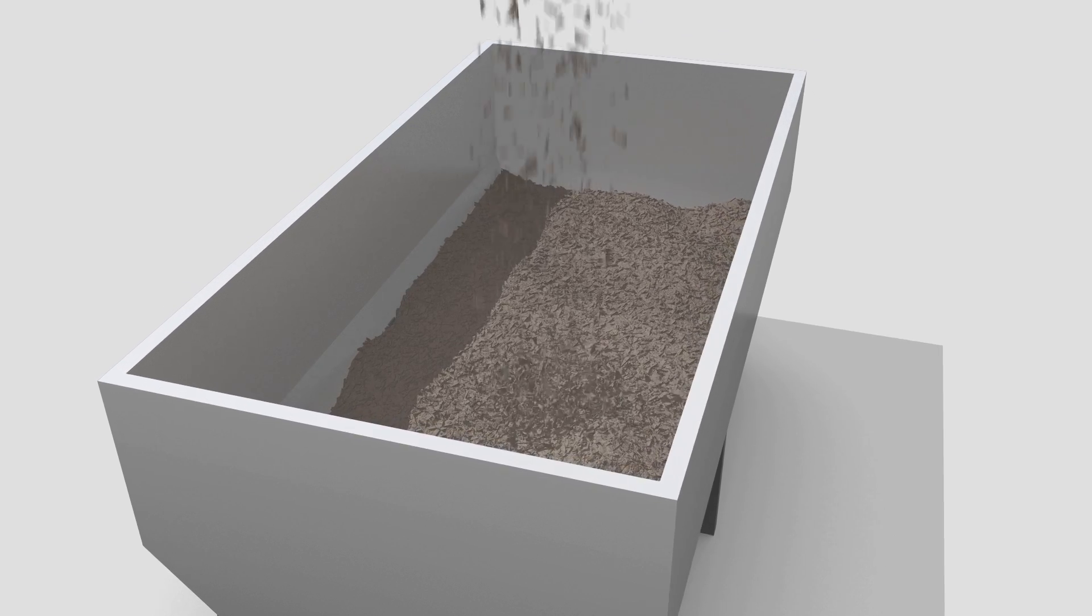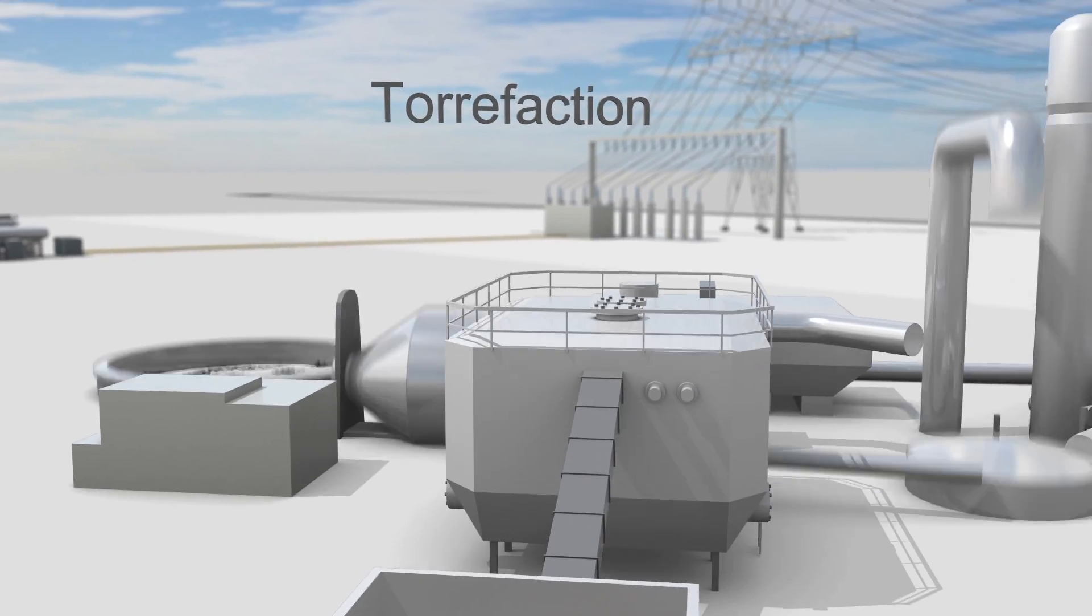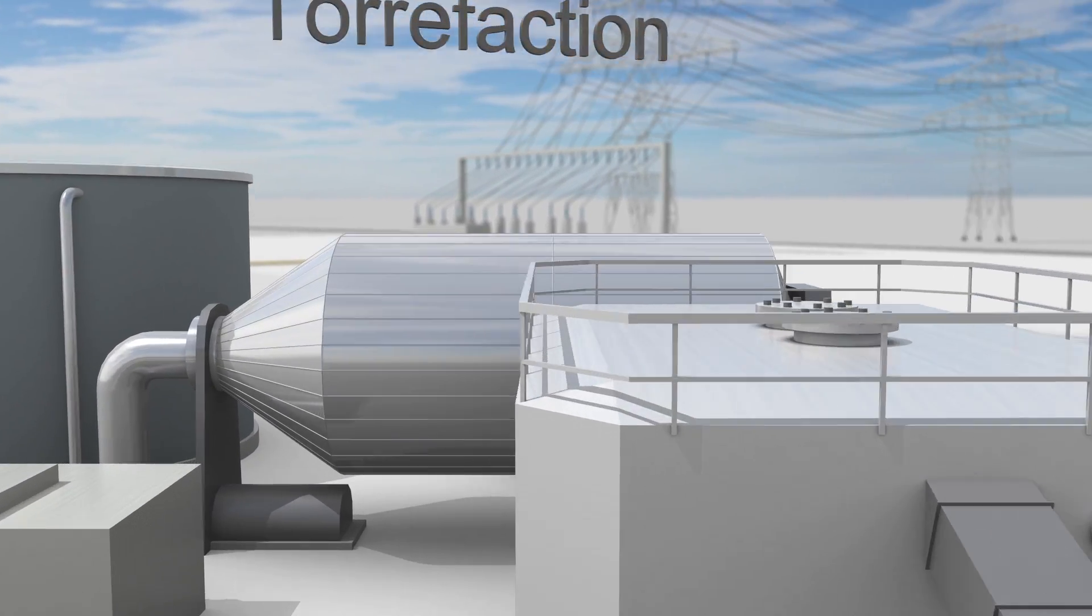At the base of this process, we find organic wood material, a residual from the logging of sustainably managed forests. Through an ingenious new process called torrefaction, this wood is transformed into bio-coal.